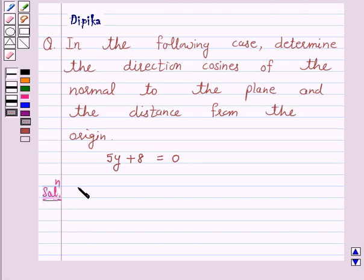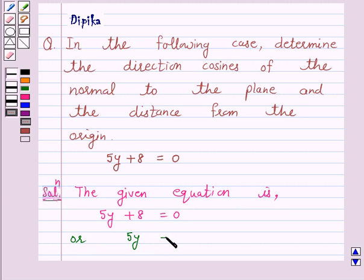Now the given equation of the plane is 5y plus 8 is equal to 0, or this can be written as 5y is equal to minus 8.